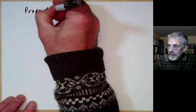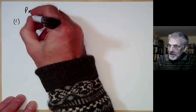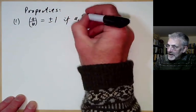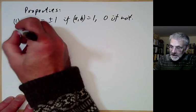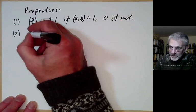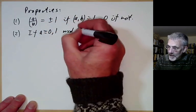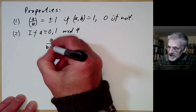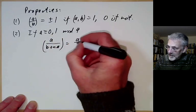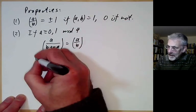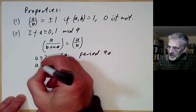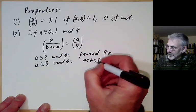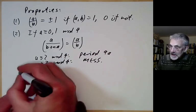What properties does the Kronecker symbol have? First, just like the Jacobi symbol, (a/b) is ±1 if a and b are coprime, and 0 if they are not. Second, we get periodicity properties: if a ≡ 0 or 1 mod 4, then (a/b) is periodic in the denominator, meaning (a/(b + na)) = (a/b). If a ≡ 2 mod 4, the period is 4a, and if a ≡ 3 mod 4, the result is a mess.